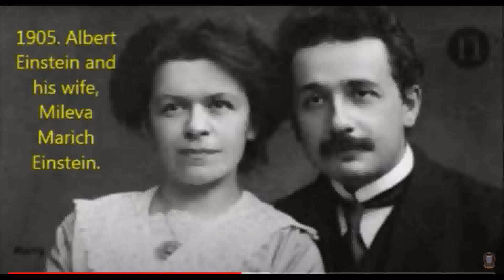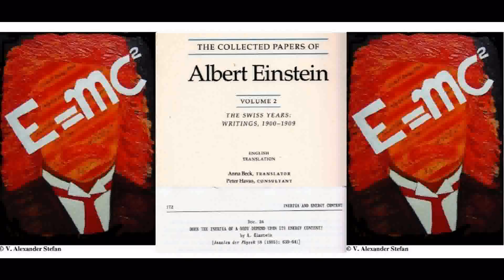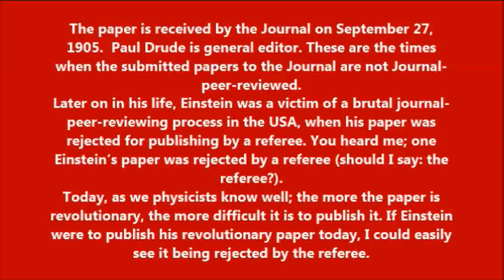His loving wife, Mileva Maric Einstein, is waiting for him and smiling back. The paper is received by the journal on September 27, 1905. Paul Drude is general editor. These are the times when submitted papers to the journal are not peer-reviewed. Later in his life, Einstein was a victim of a brutal journal peer-reviewing process in the USA, when his paper was rejected for publishing by a referee.